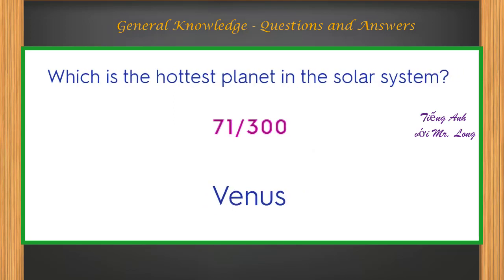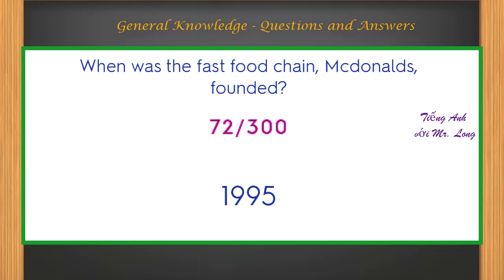Which is the hottest planet in the solar system? Venus. When was the fast food chain McDonald's founded? 1955.